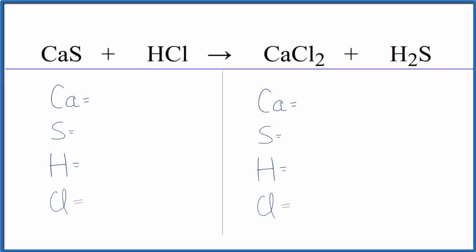In this equation, we have CaS plus HCl. This is calcium sulfide plus hydrochloric acid.